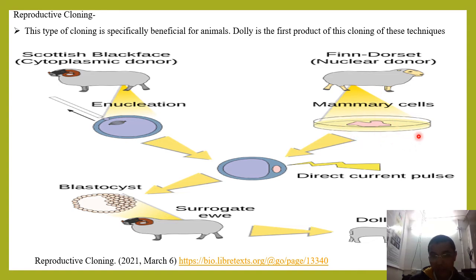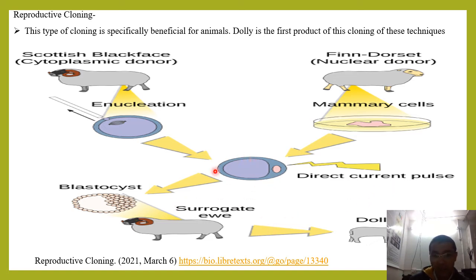The mammary cells are cultured and the nucleus is removed from these cells. From the somatic cell of the Scottish Blackface, the nucleus is removed. The nucleus of the mammary cells is inserted into this enucleated cell through a direct electric current pulse technique. This cell then becomes just like a zygote and undergoes mitotic divisions to produce a blastocyst.